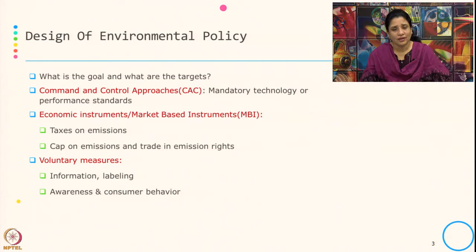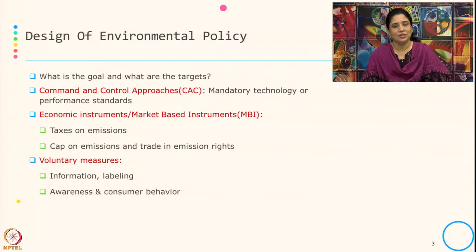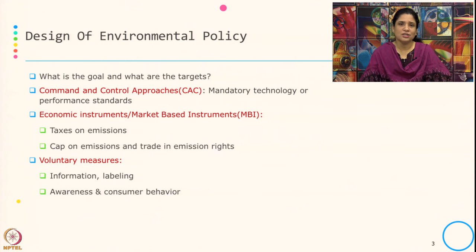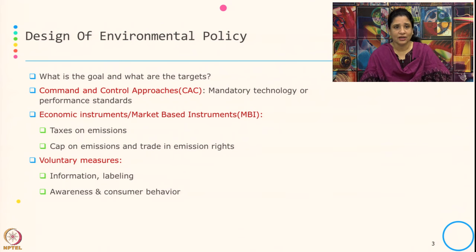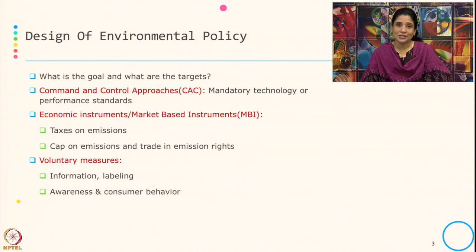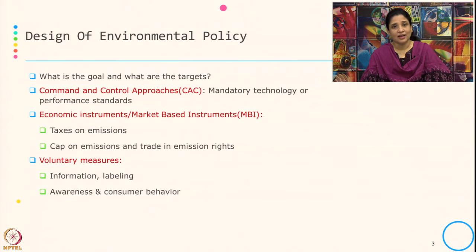In the previous session, we discussed how policy or regulation has to be used as an intervention, either to control something or to incentivize something. All environmental policy typically deals with some goals and accordingly fixes up the targets. When it comes to environmental regulatory instruments or policy instruments for environmental regulation, there are two types: one is command and control approaches, and second there are economic instruments or market-based instruments.